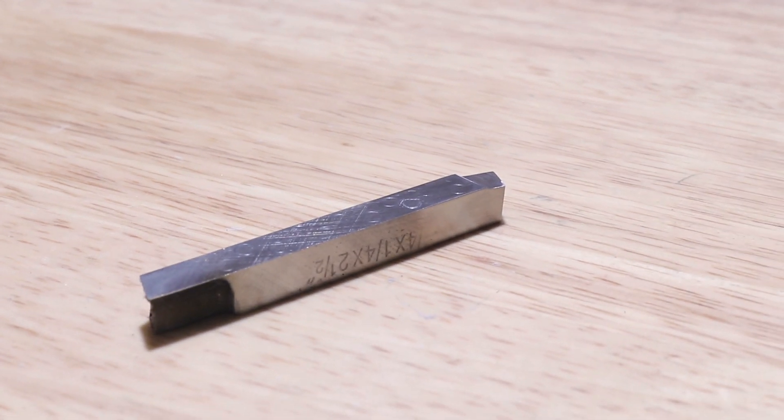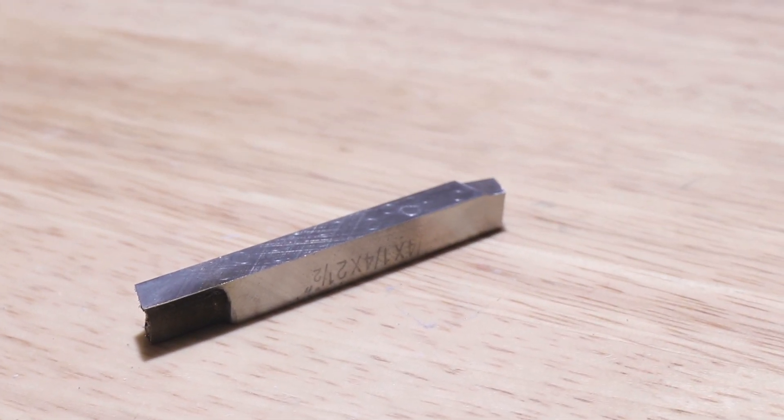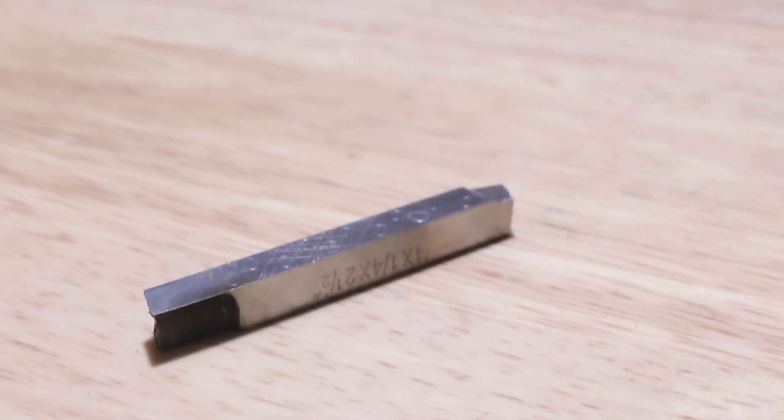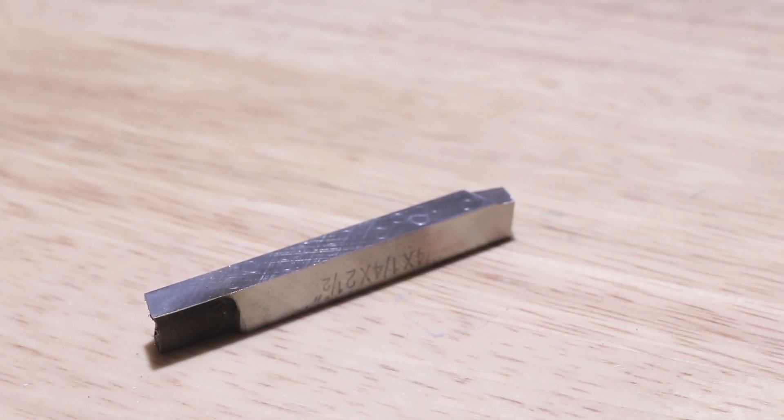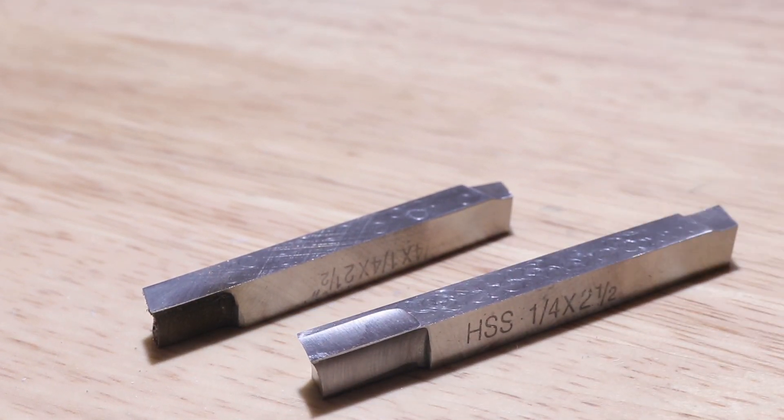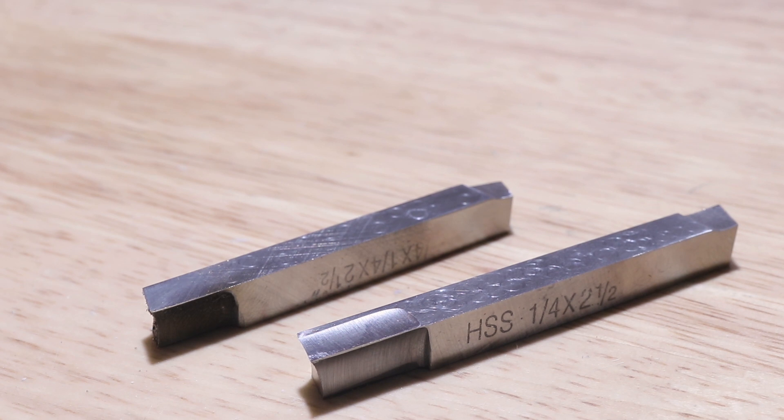However, if you want to cut soft metals, such as aluminum or plastic, we need to make a side rake angle, and this is easily achieved by flipping the tool 90 degrees in the tool post and making a few very light passes. This makes a really good sharp tool with a high rake.